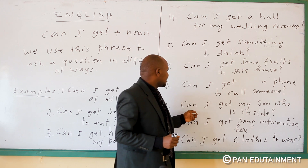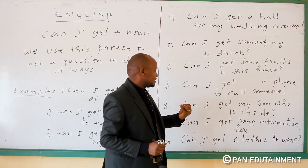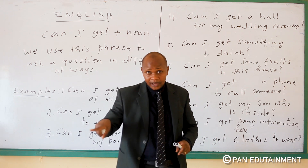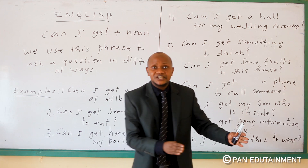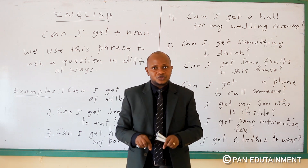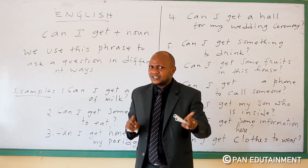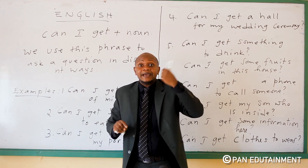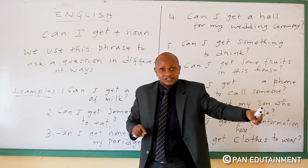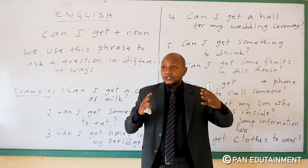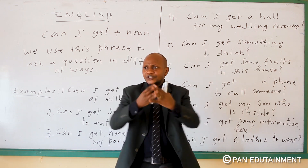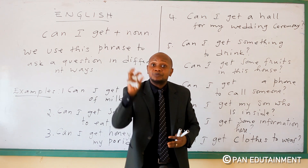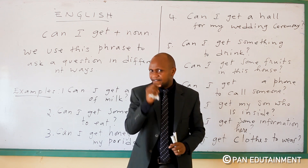Number eight: can I get my son who is inside? You have hidden my son in this house — can I get my son who is inside? Because you have information that your son is inside, you rush there and try to tell people if you can get your son who is inside. It's a very good sentence.